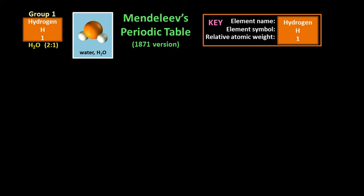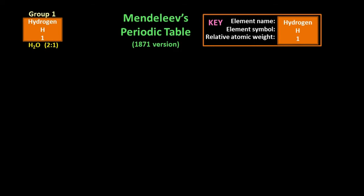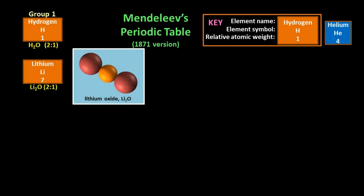Well, the reaction of each element with oxygen was one of the keys to organizing the elements into a periodic table, as we're about to see. The next heaviest element is helium, but helium hadn't been discovered. The next heaviest known element was lithium, whose atoms are 7 times heavier than hydrogen atoms. Since lithium produces Li2O when it reacts with oxygen, a 2 to 1 ratio of lithium atoms to oxygen atoms, Mendeleev decided to put lithium in the same group as hydrogen.